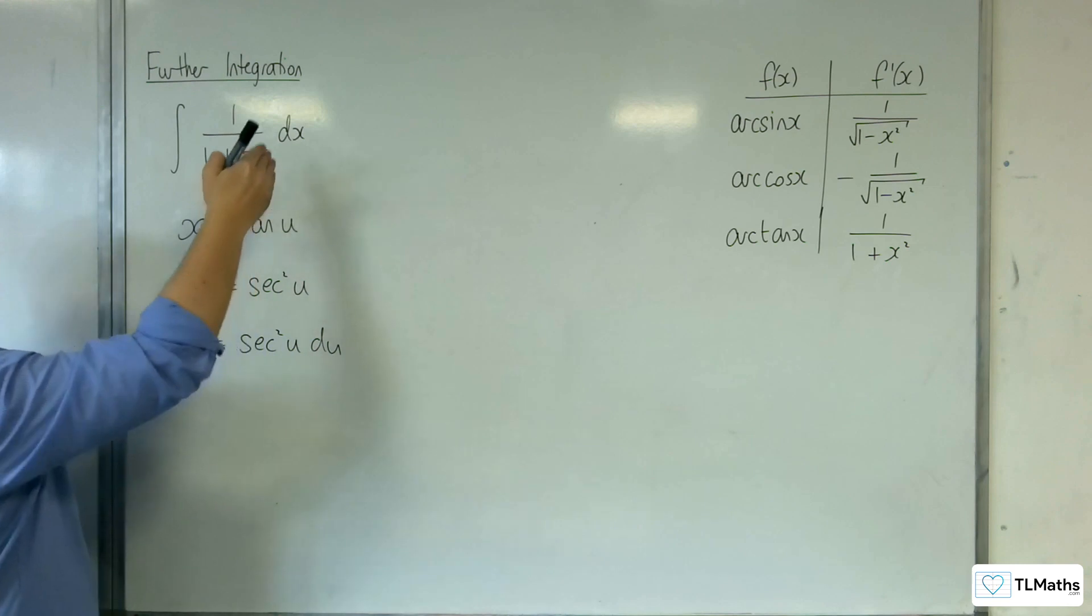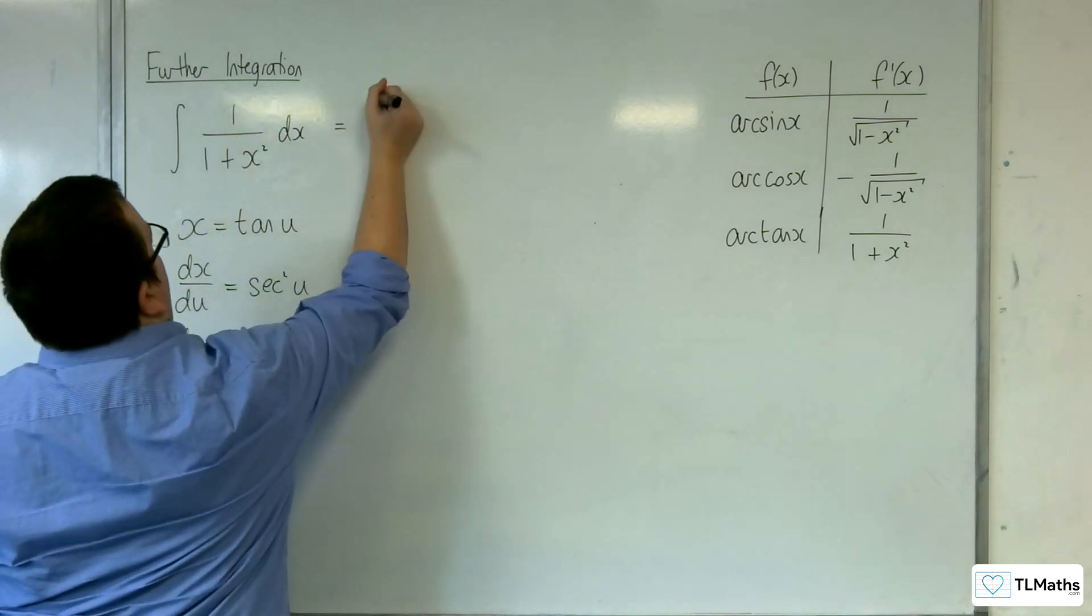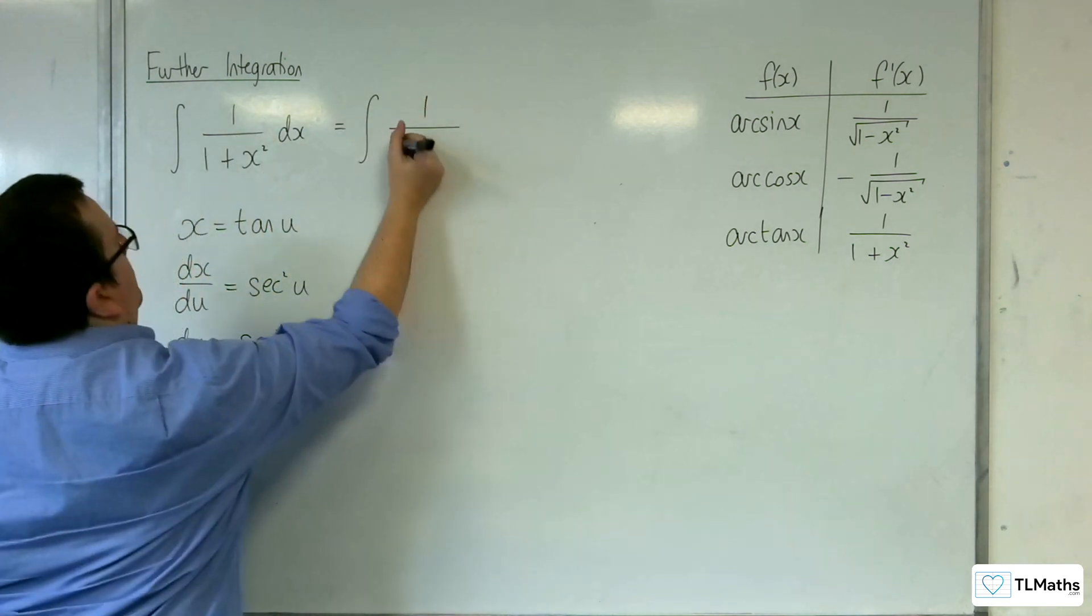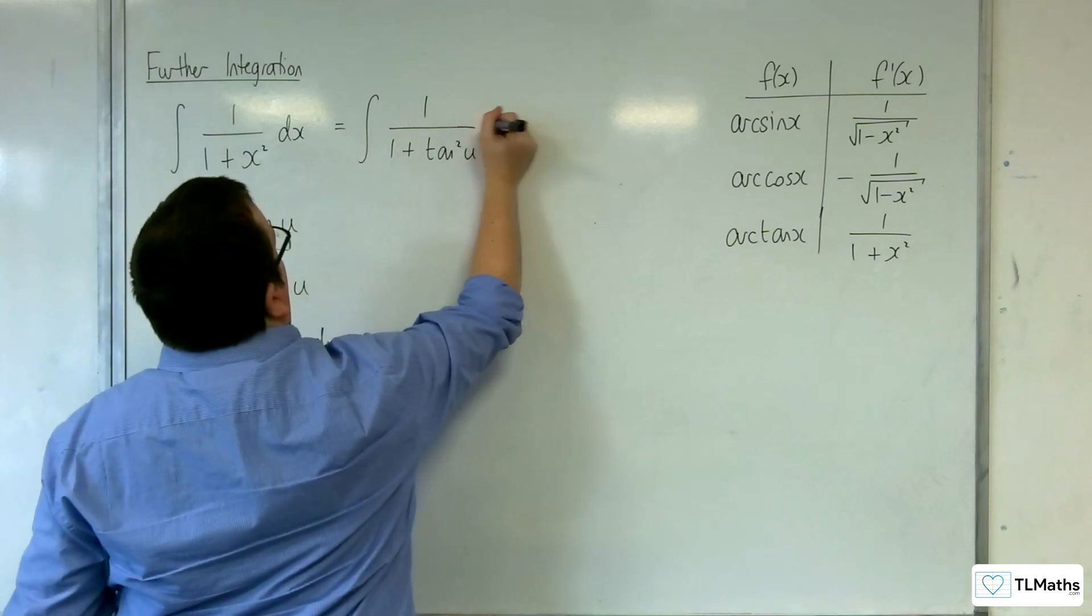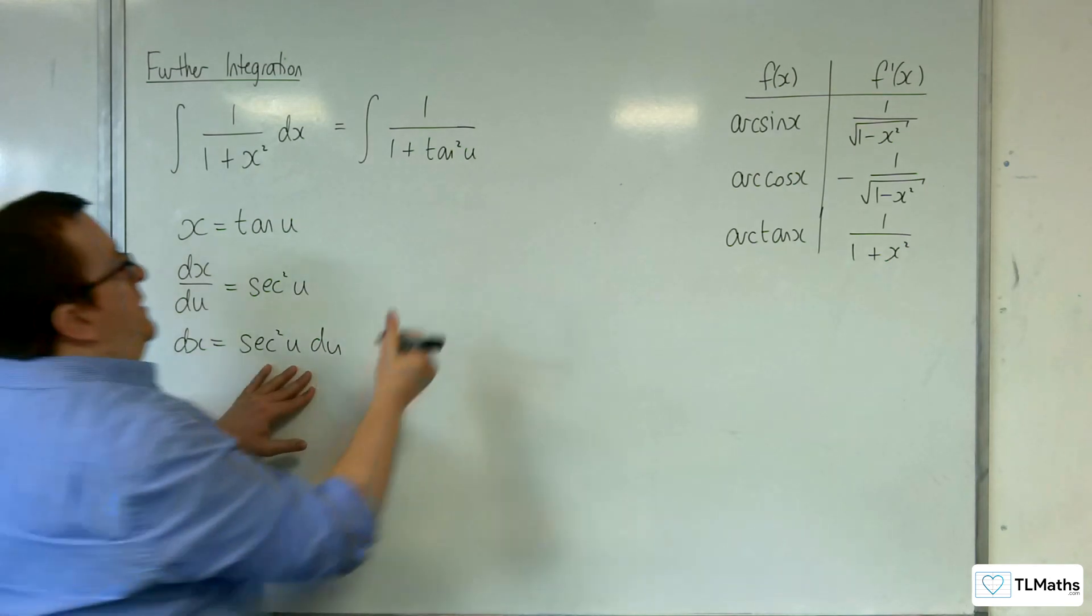So, we've now got a replacement for the x and the dx. So, we have the integral of 1 over 1 plus tan squared u times sec squared du.